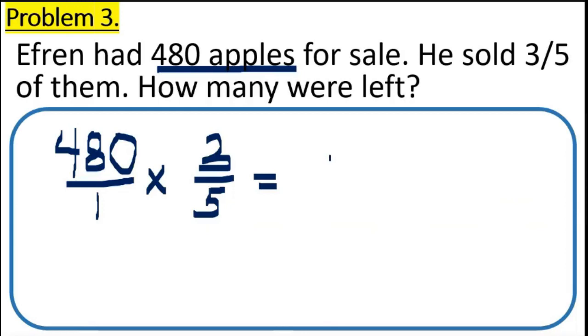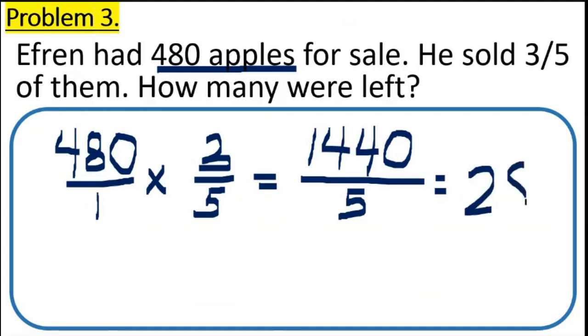If we're going to multiply 480 by 3, 3 times 480 is 1,440. And then, 1 times 5 is 5. And then, we're going to divide 1,440 by 5. So, we will have 288. 288 is the apples sold by Efren.